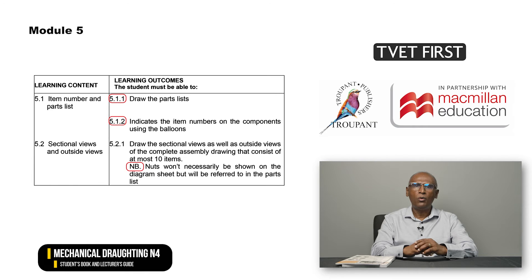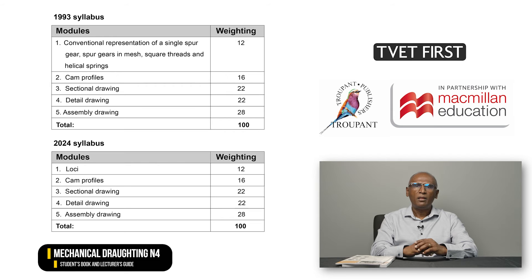Has Module 5 remained the same? No. Module 5 on assembly drawing contains more detail on what is required regarding item numbers and parts lists. An important note states that nuts will not necessarily be shown on the diagram sheet, but will be referred to in the parts list. The module weightings in the revised curriculum are the same, even though Module 1 is new. Have a look at the table on your screen to see the 1993 module weightings as compared to the 2024 weightings.